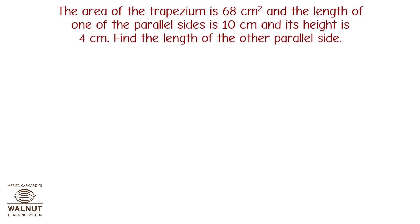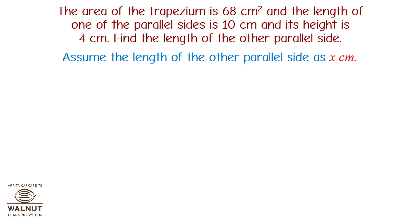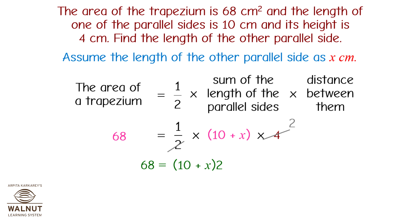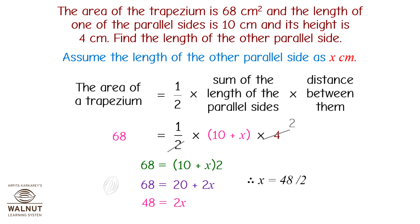The area of a trapezium is 68 cm² and the length of one of the parallel sides is 10 cm, and its height is 4 cm. Find the length of the other parallel side. Assume the unknown parallel side as x cm. Area equals half into (10 plus x) into 4. Therefore, 68 equals (10 plus x) into 2, so 68 equals 20 plus 2x, so 68 minus 20 equals 2x, so 48 equals 2x, so x equals 48 divided by 2, which equals 24 cm. Thus, the length of the other parallel side is 24 cm.